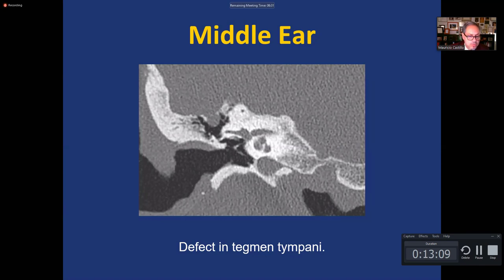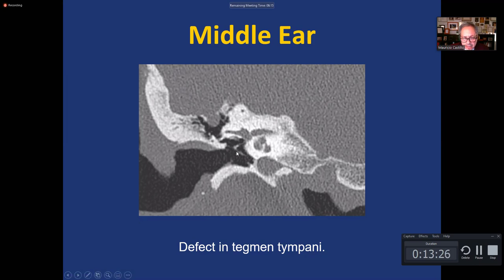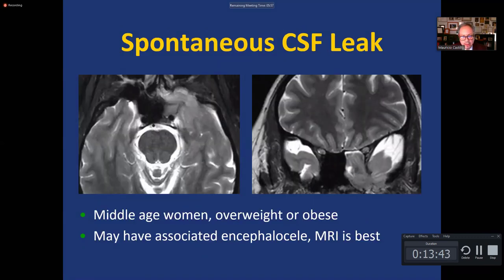Here is something we've all seen: a piece of temporal lobe herniating into the middle ear through a defect in the tegmen tympani. This patient had intermittent rhinorrhea — the CSF drains into the middle ear cavity and then through the eustachian tube into the nose because the tympanic membrane is intact. For patients to have otorrhea, they must have a perforated tympanic membrane for the fluid to leak out through the middle ear and outer ear.